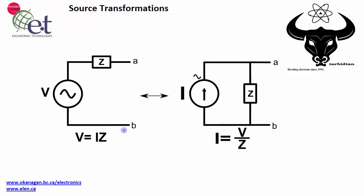You can see this conversion in these simple circuits. A voltage source with a series impedance can be easily converted into a current source with a parallel impedance. These impedances in both circuits are the same — the only difference is the source type. If you are given a voltage source, you can convert it to a current source by dividing the voltage by the impedance. Going the other way, the voltage equals current times impedance.